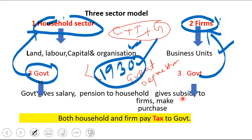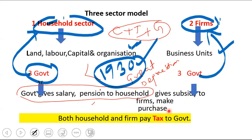Before drawing the diagram, let's be clear how the government helps the household sector. For example, if you are working in a government institution, your salary comes from the government. If someone retired from Bank of Baroda, they receive a pension — that is also given by the government. So government provides salary, pension, and wages to the household sector.